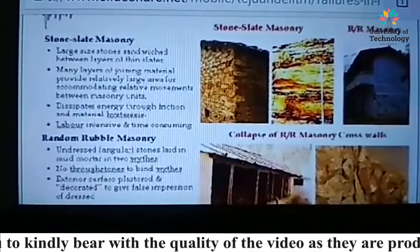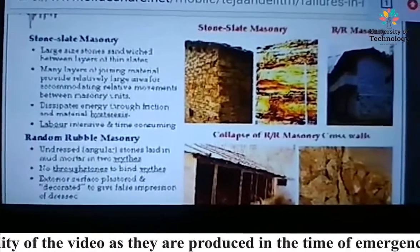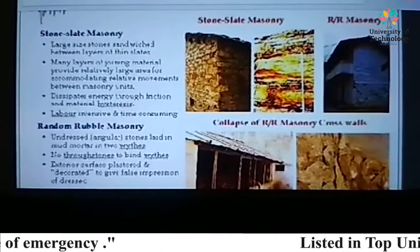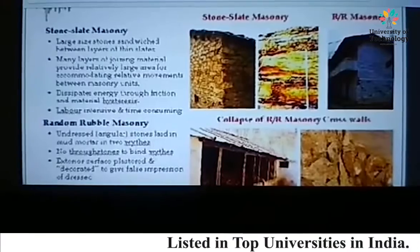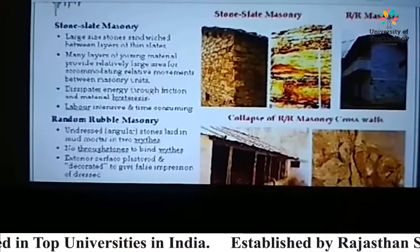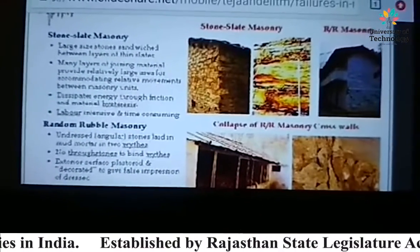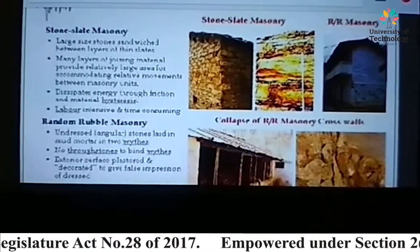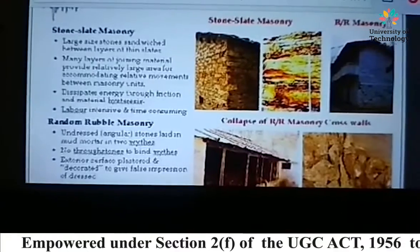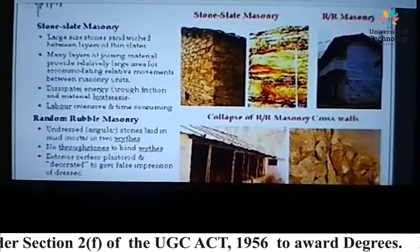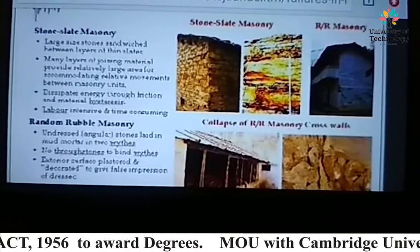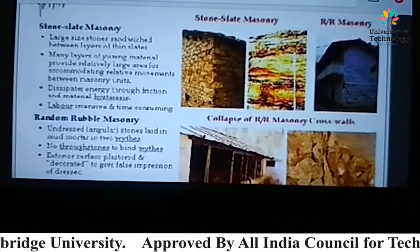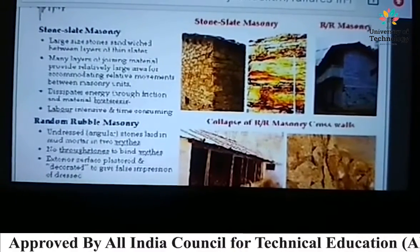There are several types of stone masonry structures, such as stone slat masonry and random rubble masonry, as seen in the pictures. RR masonry buildings and stone slat masonry buildings are generally found in poor regions or in villages. These structures may collapse due to the sudden impact of an earthquake, and RR masonry tends to be weak.